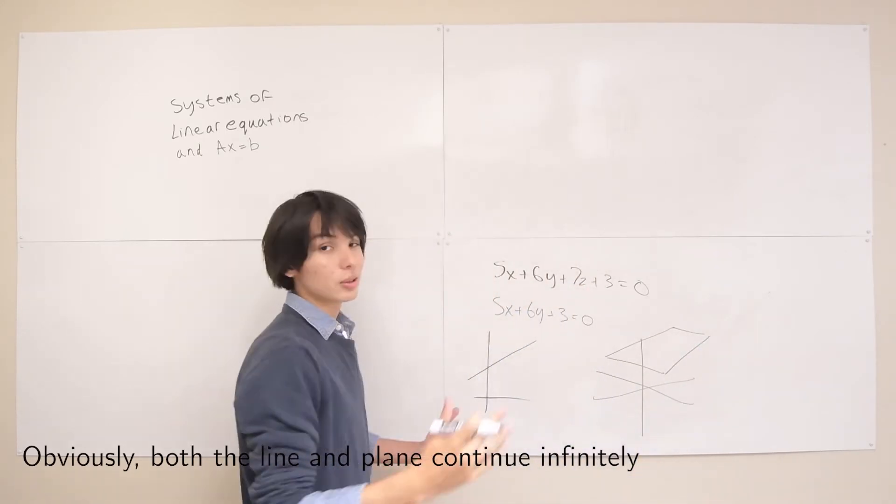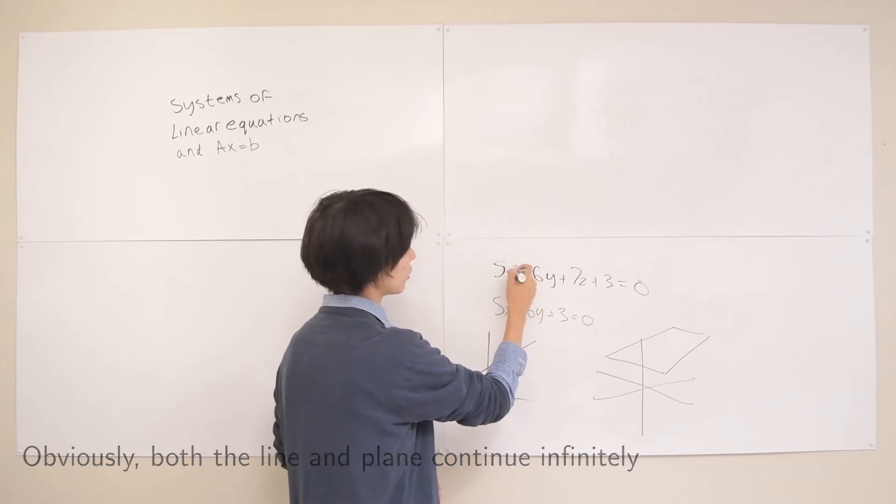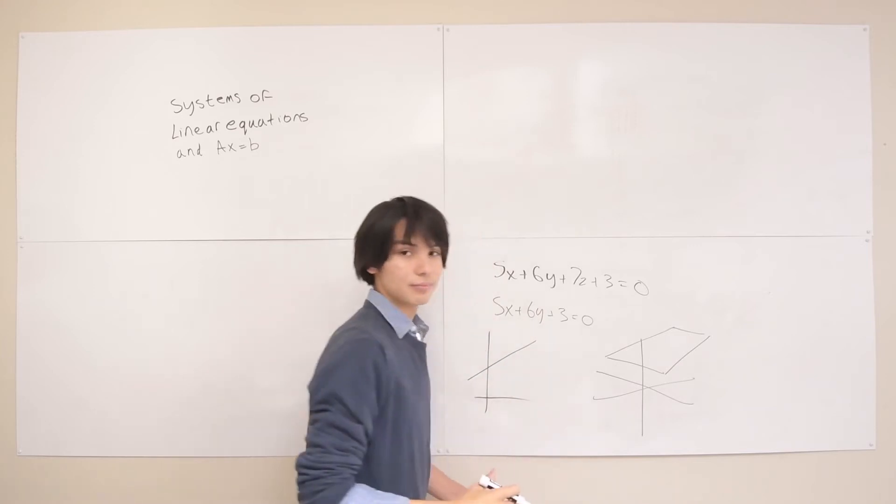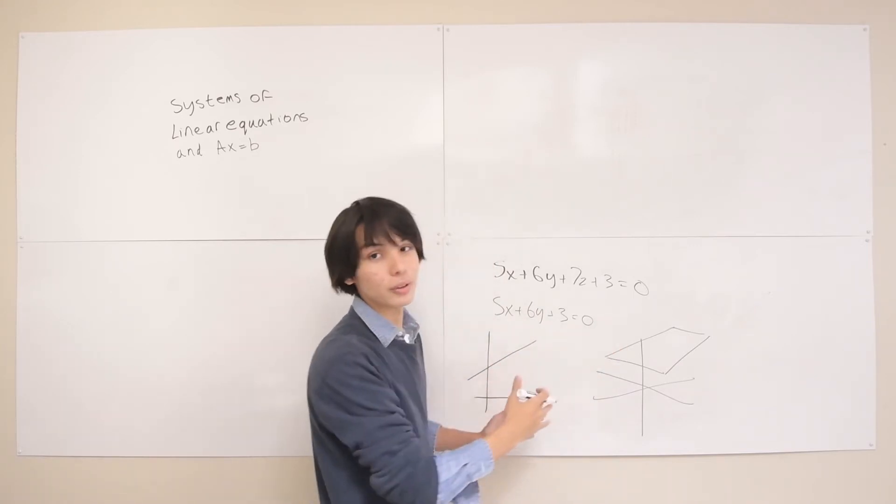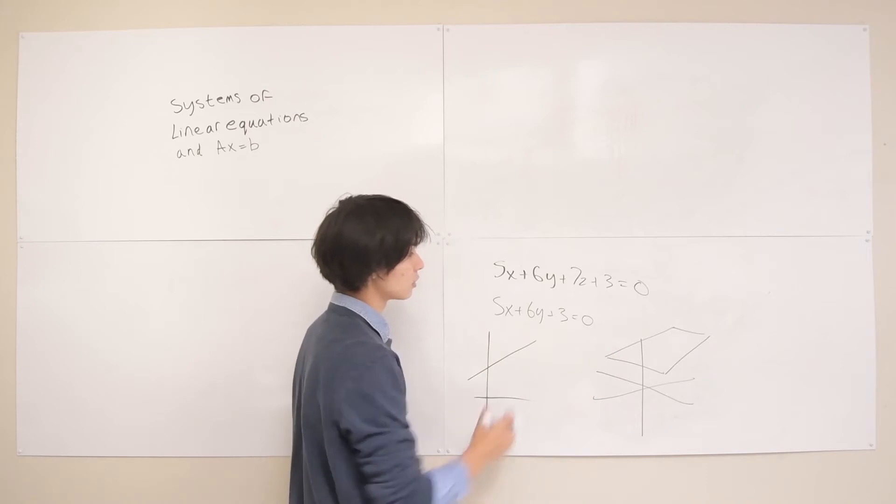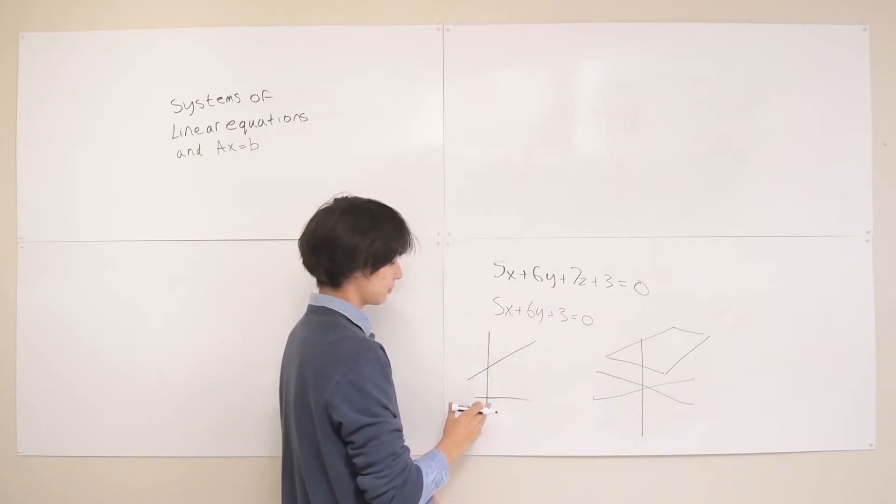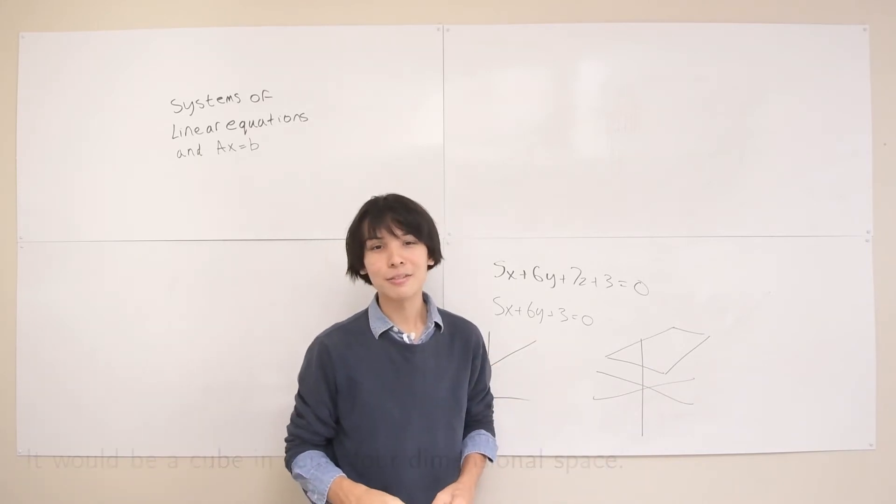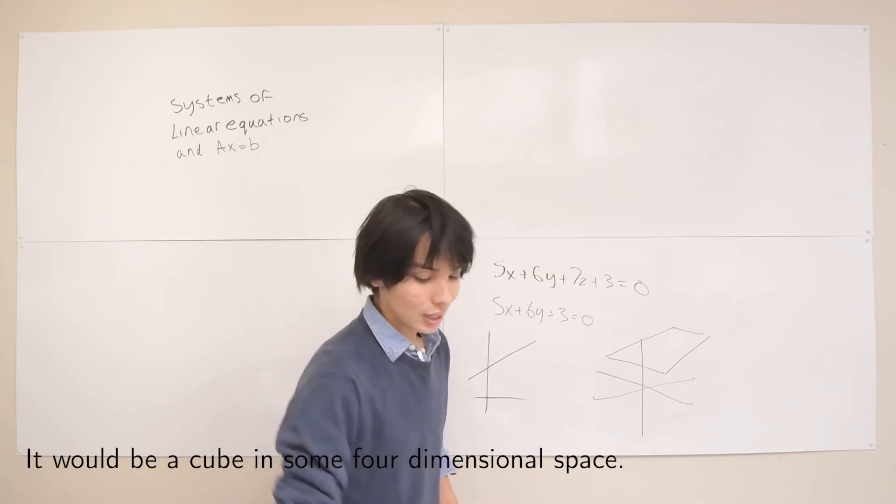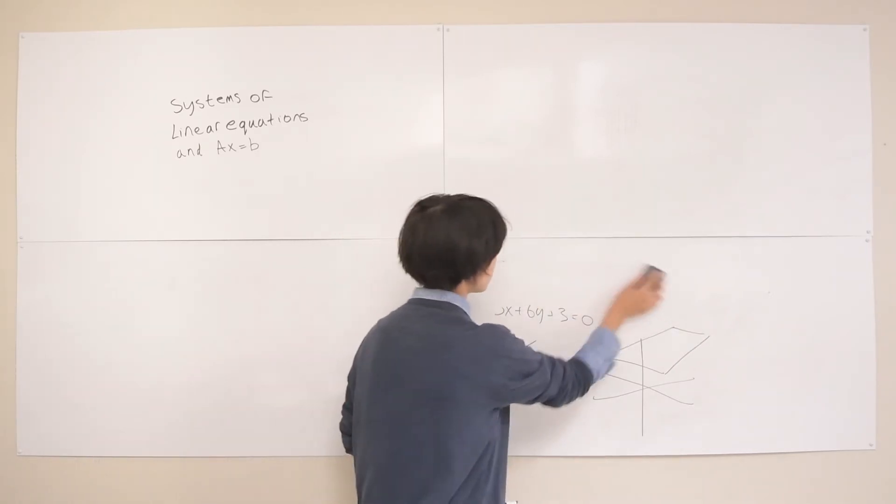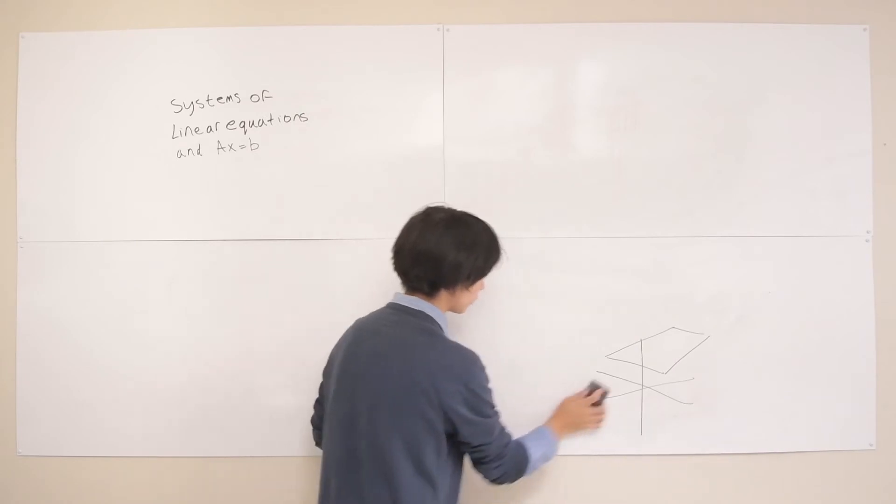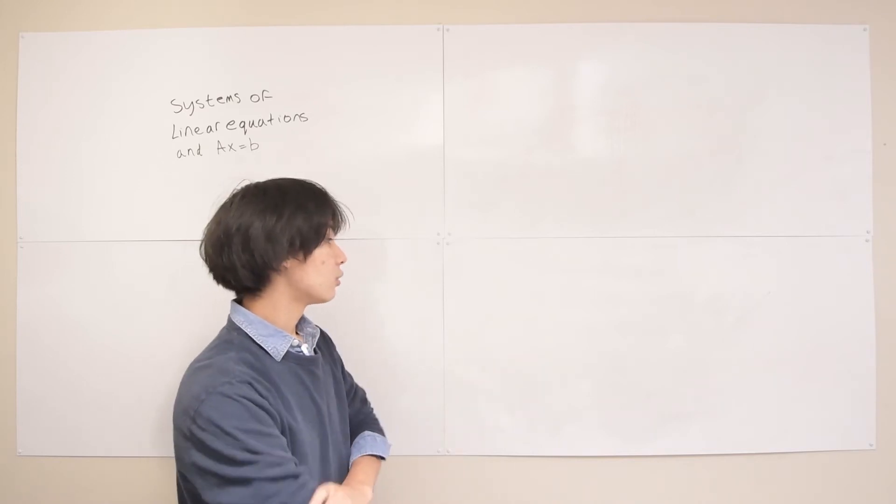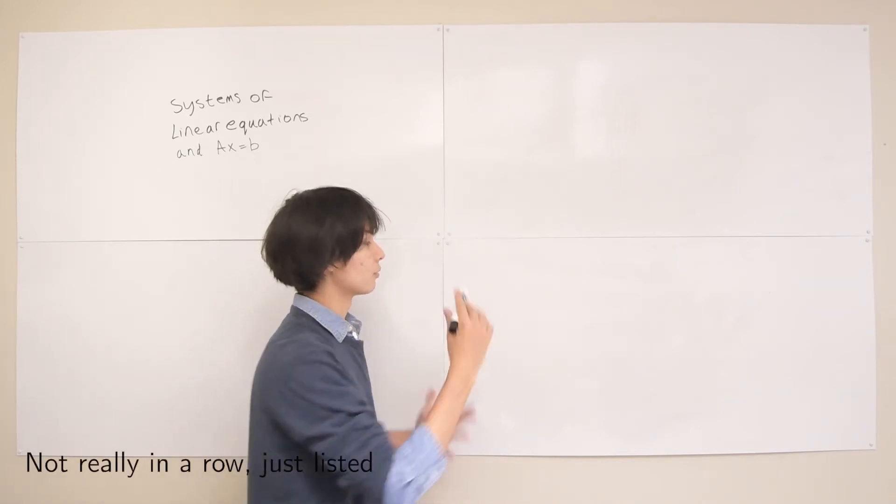So basically the intuition here and why we call them linear is because anything of this form with no higher powers, so a first degree polynomial, is going to display something that is not curvy in its corresponding space. In three dimensions it's gonna be a plane and in two dimensions it's gonna be a line. So a system of linear equations is simply just a lot of these linear equations in a row. Let's see an example.